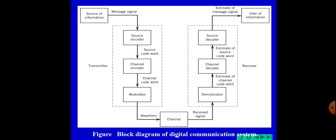Next is the digital modulator and demodulator. The modulator is on the transmitter side and the demodulator is on the receiver side. The modulator represents each symbol of the channel codeword by a corresponding analog symbol. The sequence of analog symbols produced by the modulator is called the waveform, which is suitable for transmission over the channel. The demodulator processes each received waveform and produces an output.